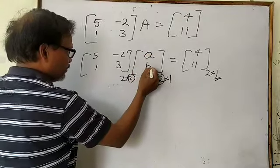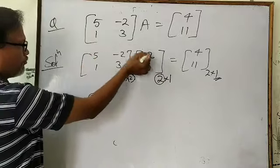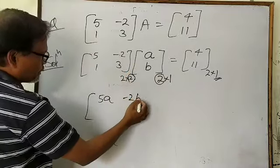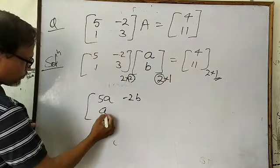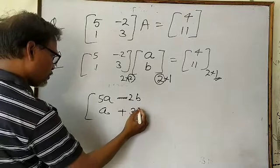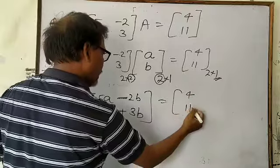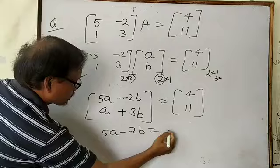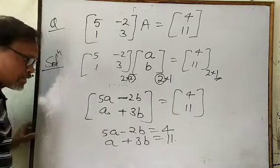Write the elements of the 2 cross 1 unknown matrix as A and B — 2 rows and 1 column. Now multiply: first row: 5 into A minus 2 into B. No more columns, so take the second row: 1 into A plus 3 into B. The result equals 4 and 11. Compare: 5A minus 2B equals 4, and A plus 3B equals 11.